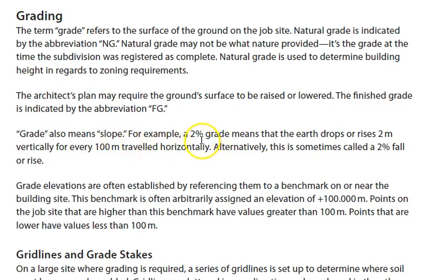For example, 2% grade means that the earth drops or rises 2 meters vertically for every 100 meters traveled horizontally. Alternatively, this is sometimes called a 2% fall or rise.